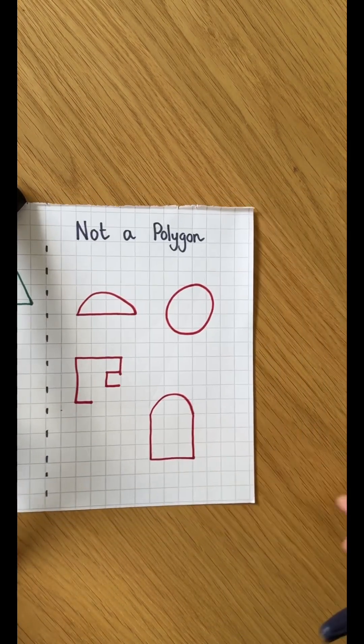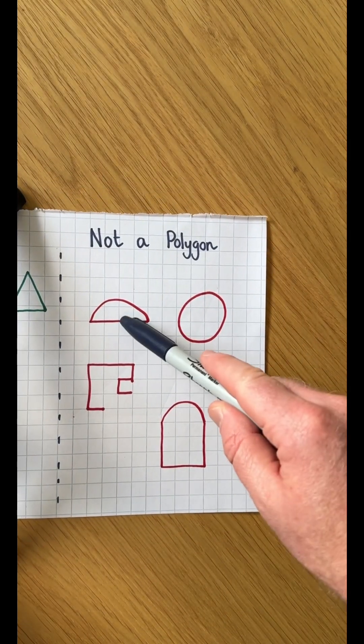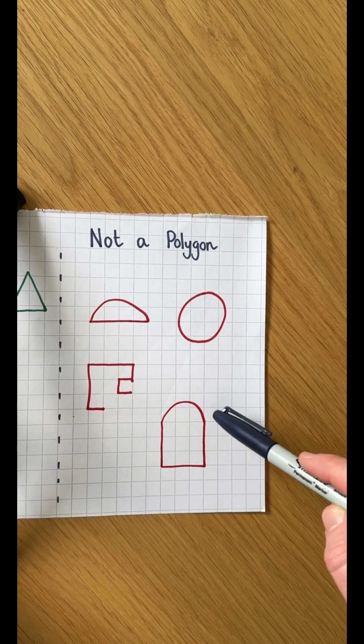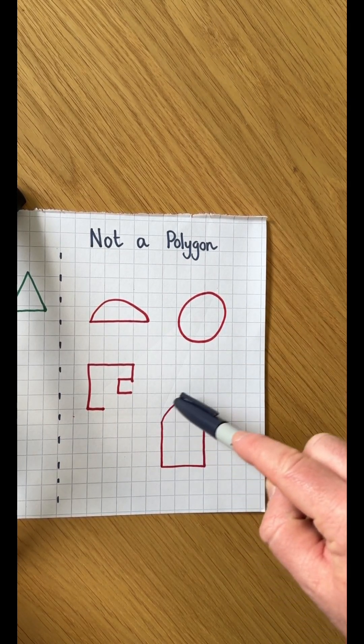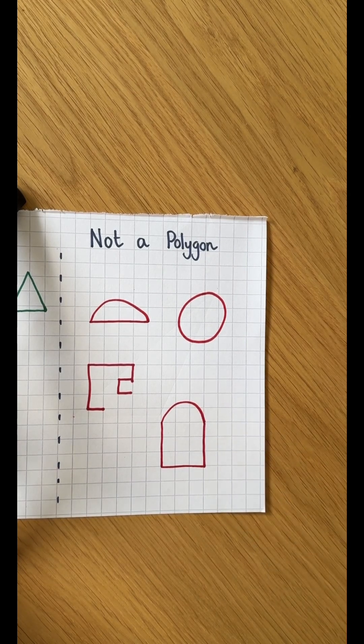Any shape that has curved sides, like a circle, a semicircle, or this shape here with a curved edge, is not a polygon.